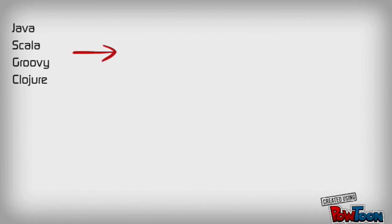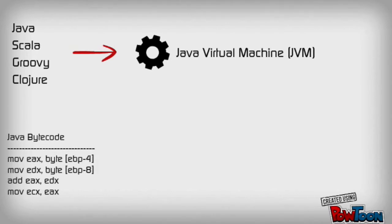So Java, Scala, Groovy, and Clojure, as you just saw, run on what we call the Java virtual machine, the JVM. It's still the same thing. It's what takes the Java bytecode and allows you to run it on your computer.